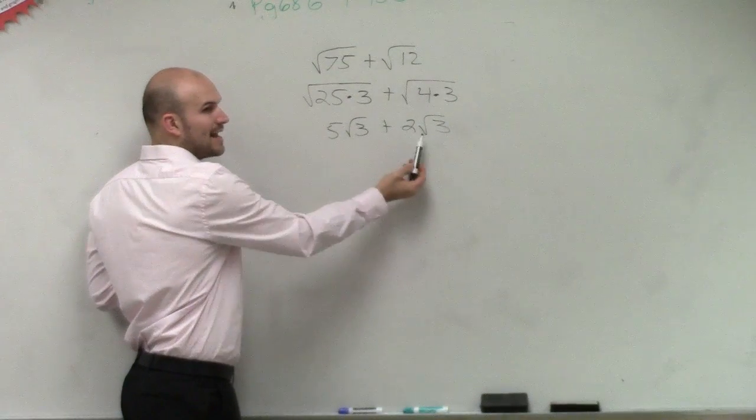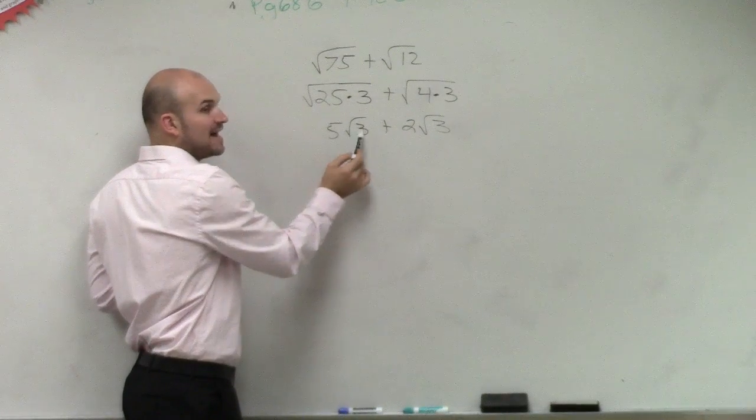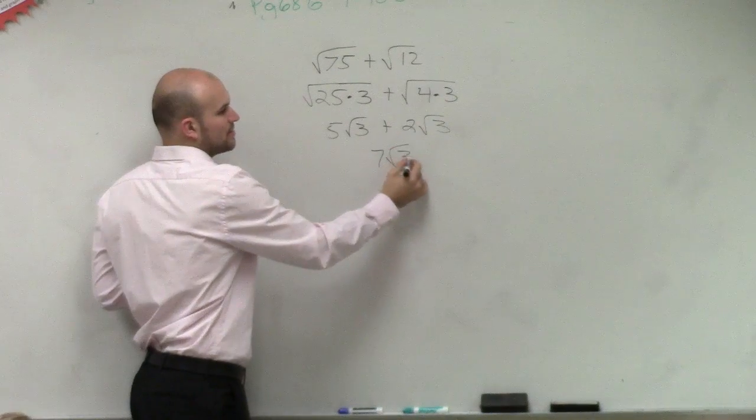Now, when adding our radicands, we're just going to say 5 square root of 3 plus 2 square root of 3 is now 7 square root of 3.